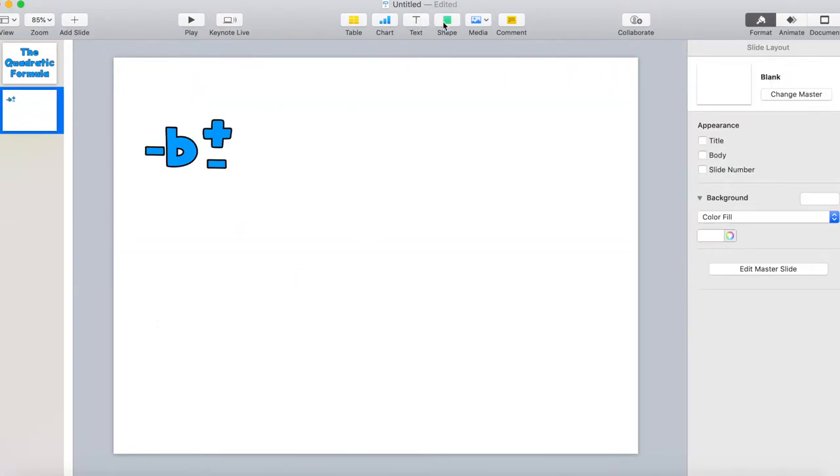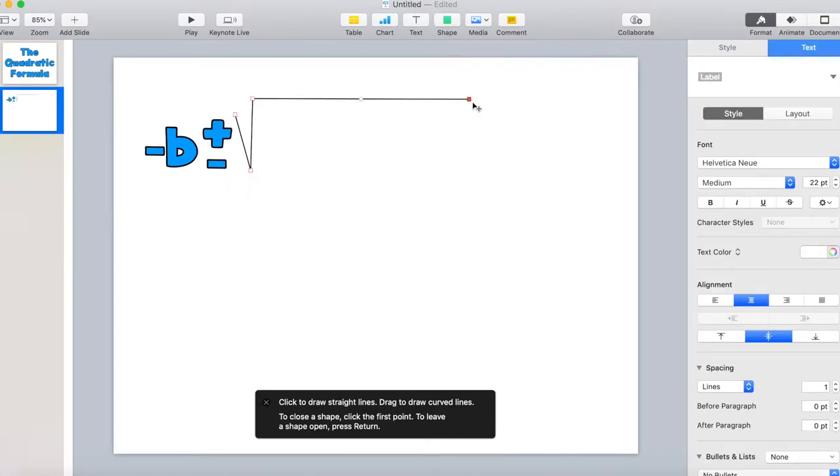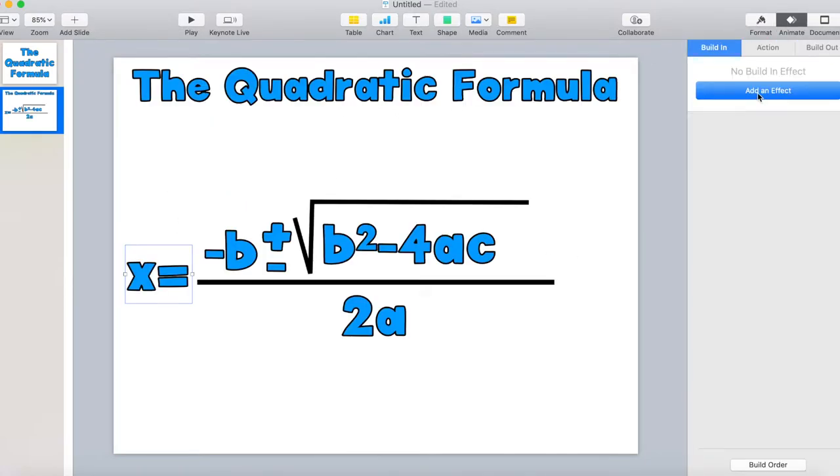Just as a side note, when I'm making an unconventional shape like a radical, I always use the freehand shape tool. It's very helpful. You can press shape and it'll be in the top right hand corner if you're using Keynote.